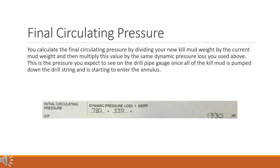Final circulating pressure (FCP). You calculate the final circulating pressure by dividing your new kill mud weight by the current mud weight and then multiplying this value by the same dynamic pressure loss you used above. This is the pressure you expect to see on the drill pipe gauge once all of the kill mud is pumped down the drill string and is starting to enter the annulus.